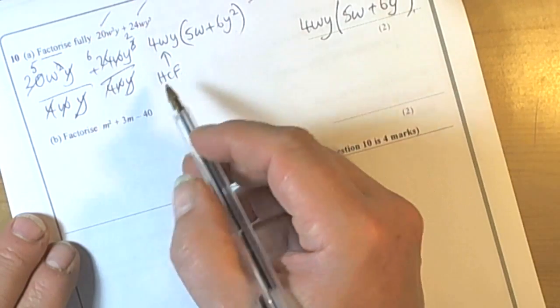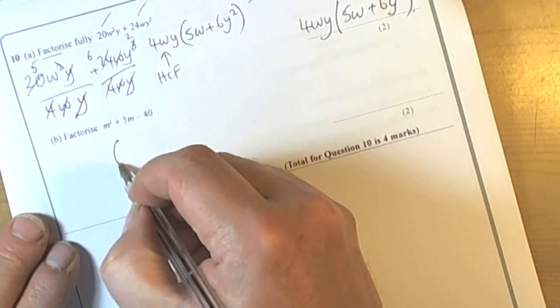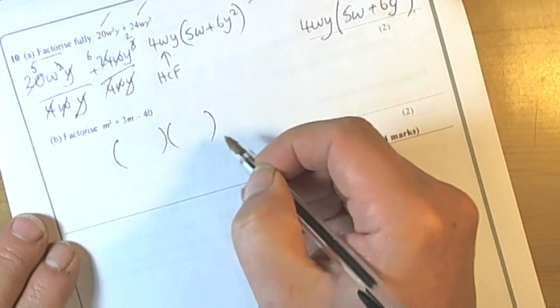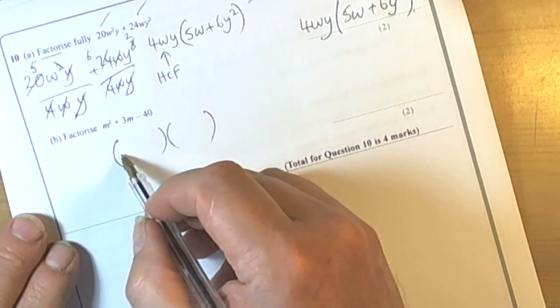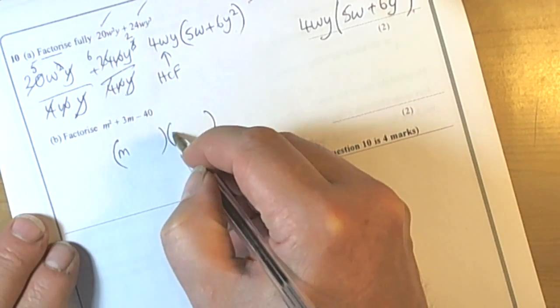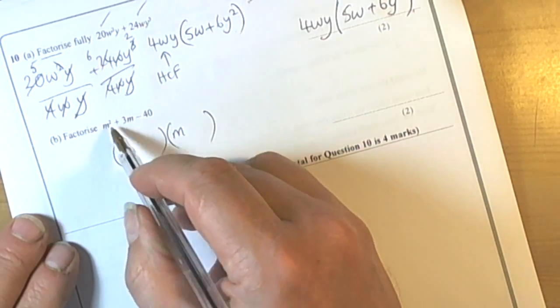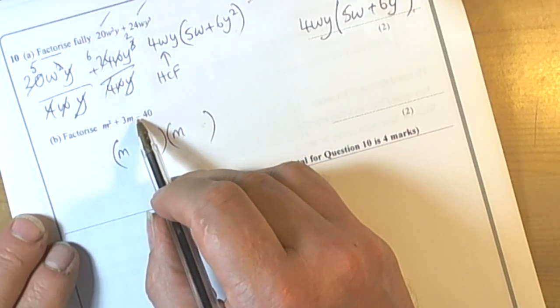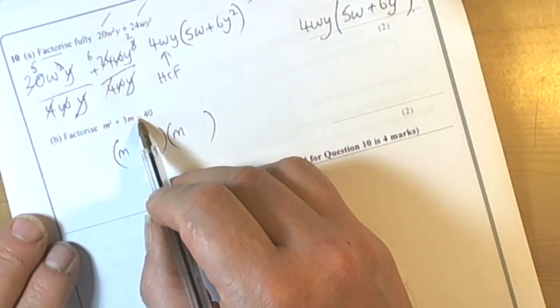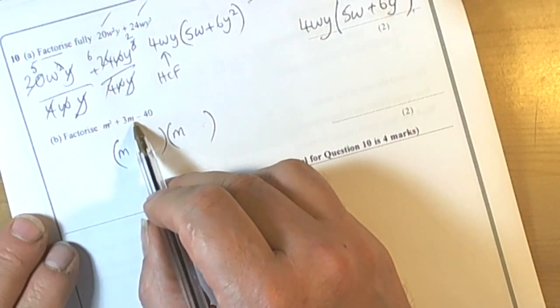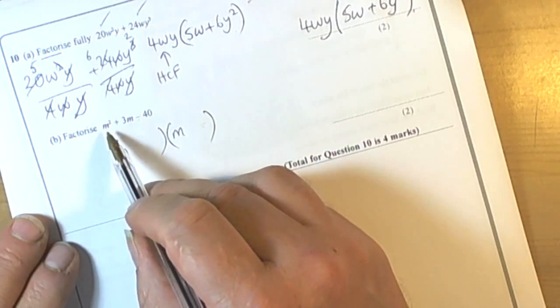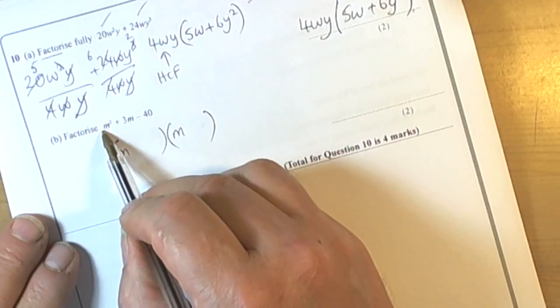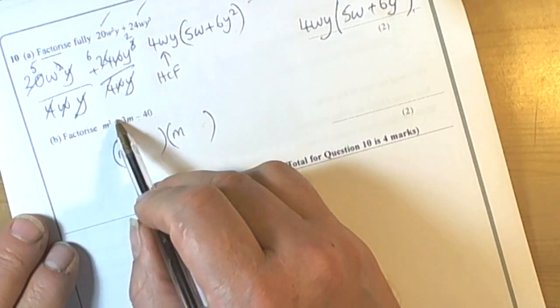It's a quadratic, so this is going to be the classic two bracket factorisation. The beginning part of each bracket must be m: m times m is m squared. And the end part of the two brackets must multiply to give us negative 40 and add to give us plus 3. This technique only works when we've got a single m squared.